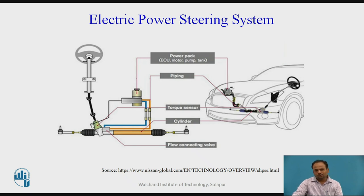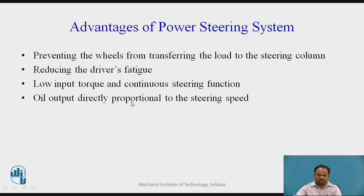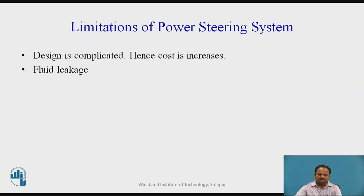After the motor starts, the gear in constant mesh with the pinion gear transmits the multiplied torque to the pinion gear, which in turn applies this torque to the rack, causing the rack to move and steer the front wheels through the tie rods. The advantages of the power steering system include: preventing wheels from transferring loads to the steering column, reducing driver fatigue, low input torque with continuous steering function, and oil input directly proportional to steering speed. Limitations include a complicated design that increases cost, and fluid leakage due to the hydraulic system.